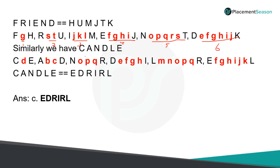When you apply this rule to CANDLE: after C, leave one letter and it is E; after A, leave two letters and it is D; after N, leave three letters and it is R; after D, leave four letters and it is I; after L, leave five letters and it is R; and after E, leave six letters and it is L. So your coded form of CANDLE will be E-D-R-I-R-L. So option C is the right answer.